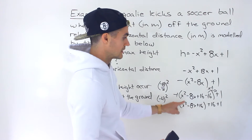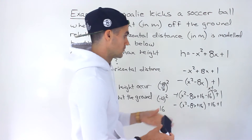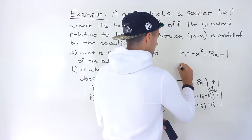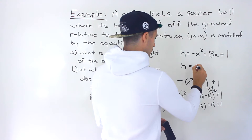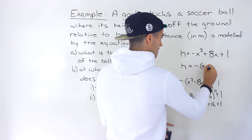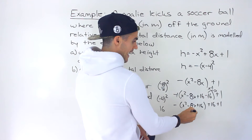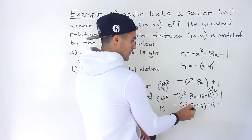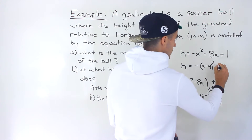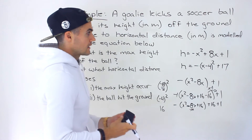The reason we do this is because that value allows the quadratic inside the bracket to be a perfect square trinomial. So the next line, we're going to have negative 1 times the quantity x minus 4 squared — it's always going to be half of that b value with the same sign — and then 16 plus 1 gives us 17.